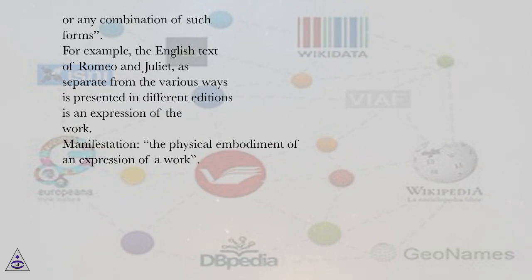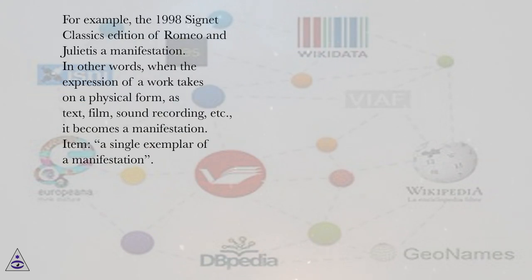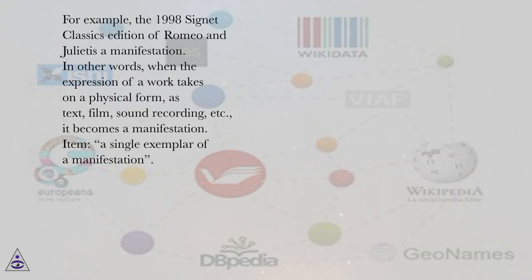Manifestation: the physical embodiment of an expression of a work. For example, the 1998 Signet Classics edition of Romeo and Juliet is a manifestation. In other words, when the expression of a work takes on a physical form — as text, film, sound recording, etc. — it becomes a manifestation.